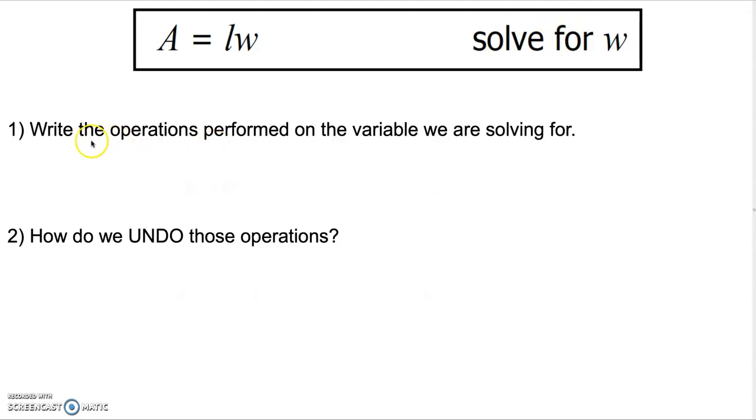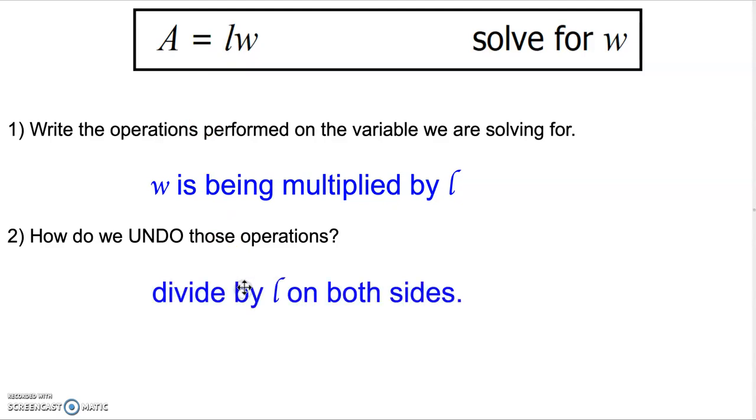So we ask ourselves two questions. What operations are being performed on the variable we are solving for to begin with? We notice that w is being multiplied by l. To be able to solve for w, we need to undo those operations. So we will need to divide by l on both sides.